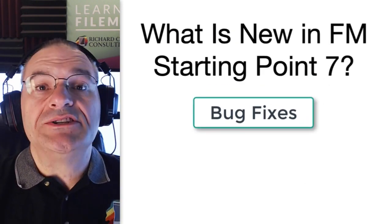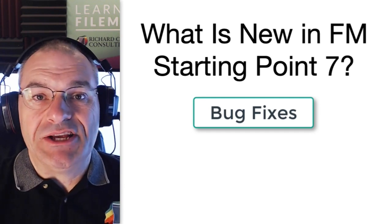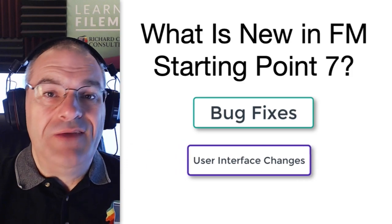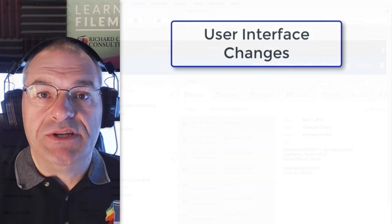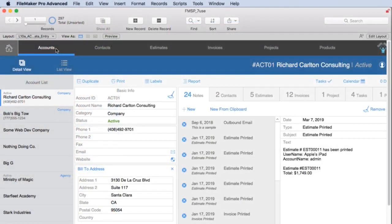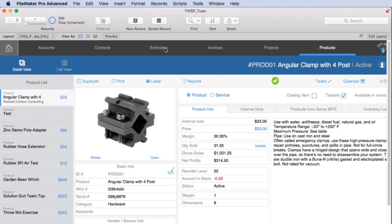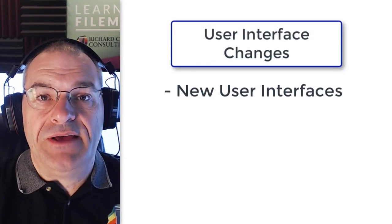So what else have we done? One of our staff, Nick Hunter, is a UI design expert, and he's created new, even more modern-looking data entry screens for the accounts module, contacts, invoicing, projects, products, and estimates, which leads us to the next feature that we decided to implement in Starting Point 7.